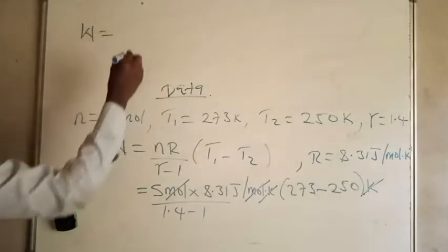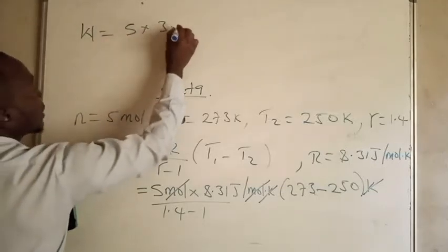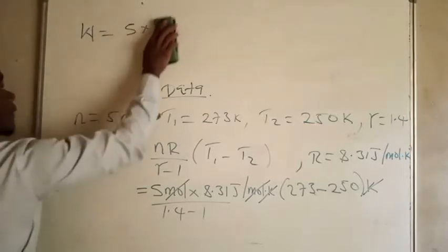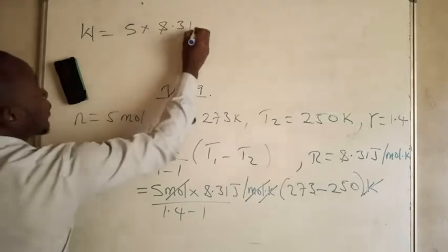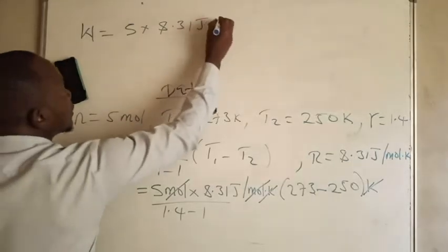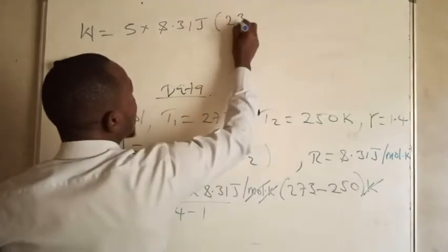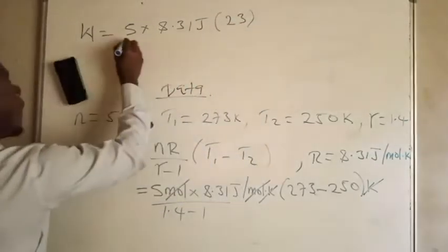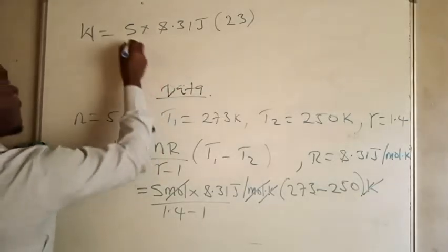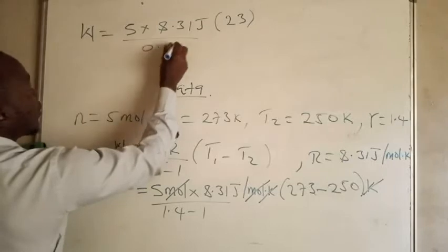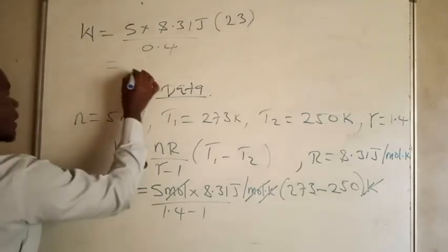The work done is going to be 5 times 8.31 joules times the change in temperature, which is 23, over 0.4. And when we punch this on the calculator, what we're going to get is: